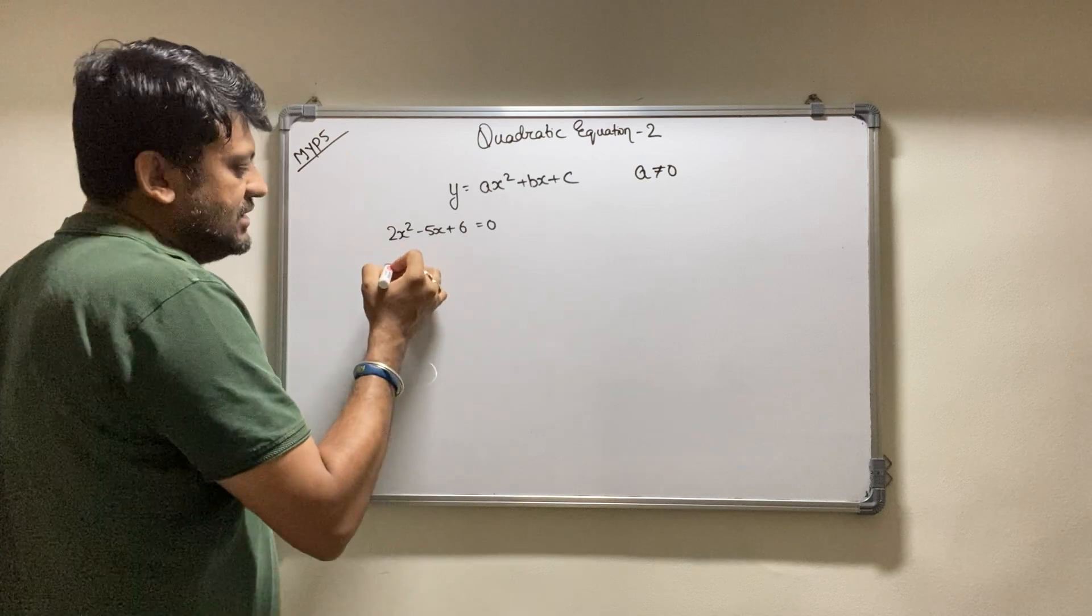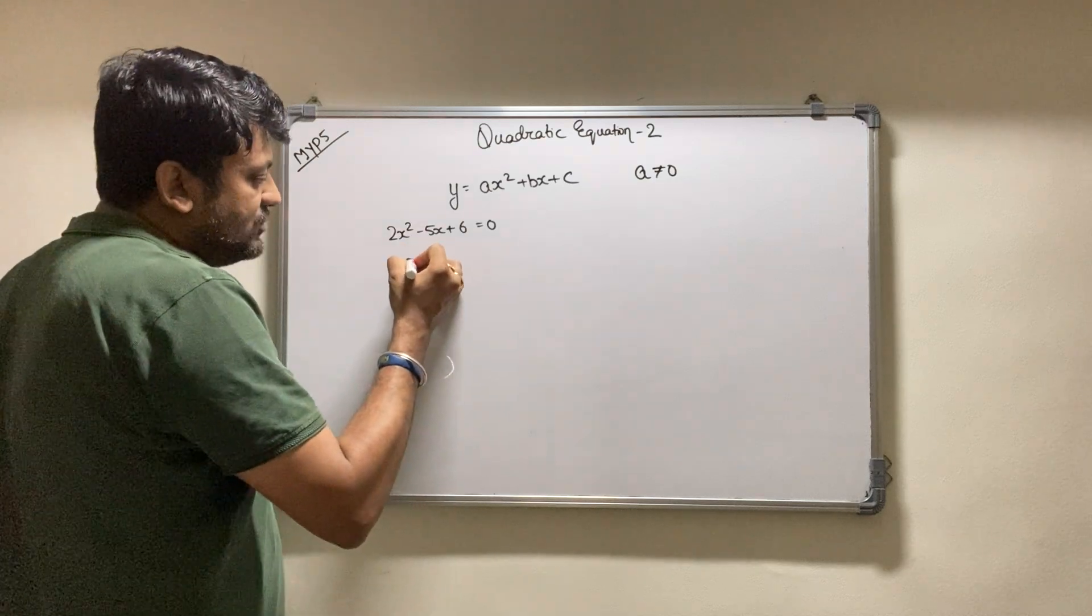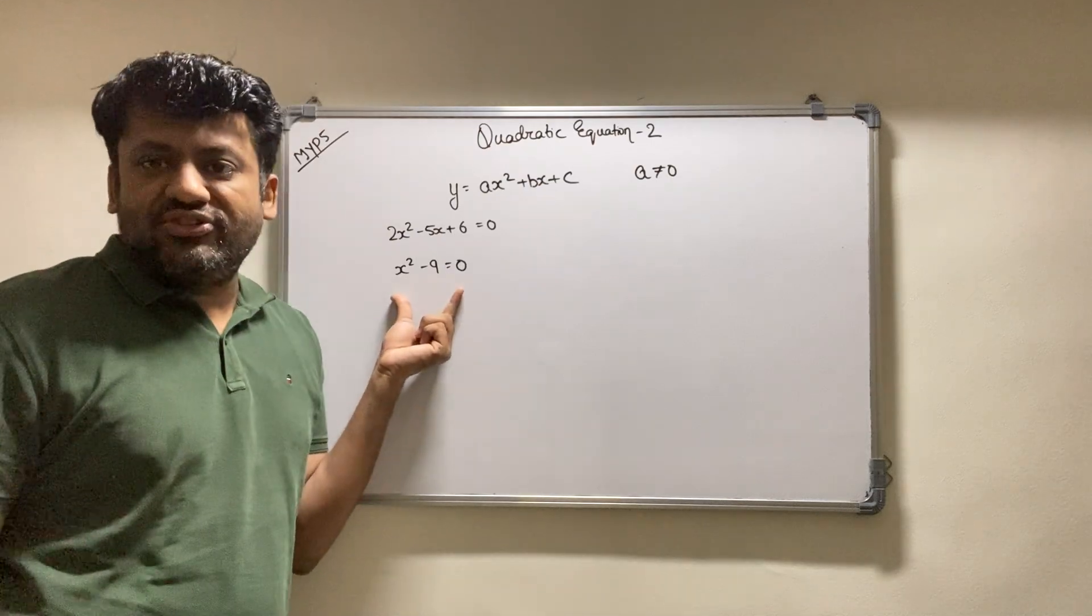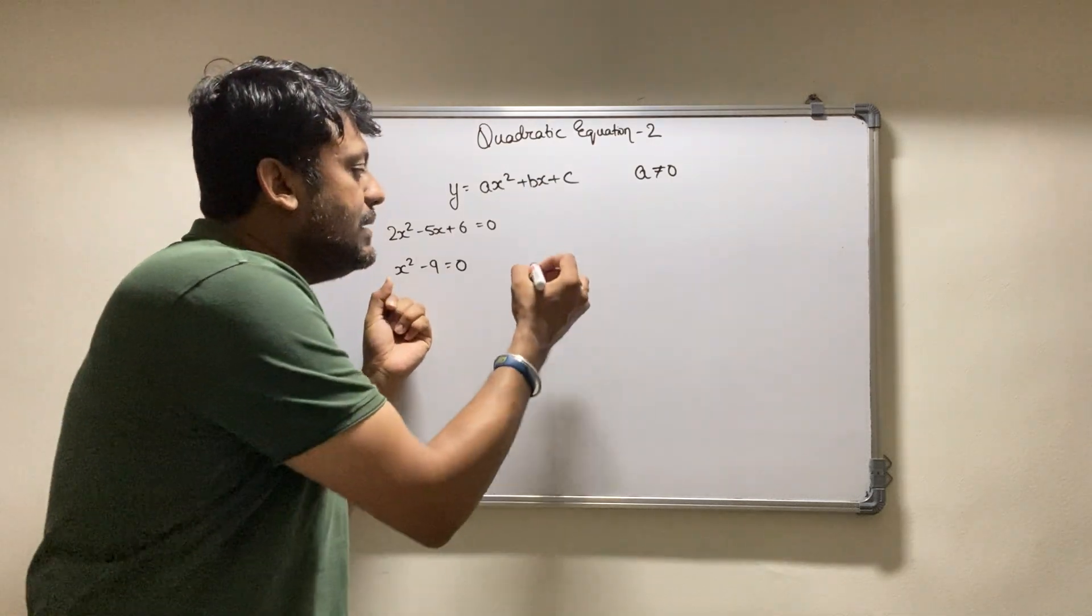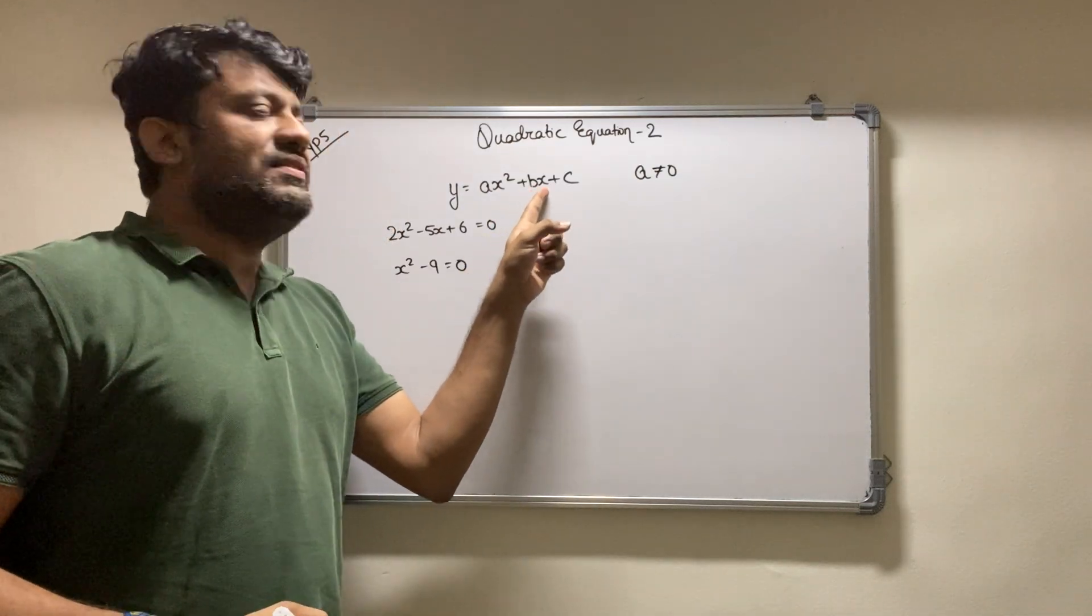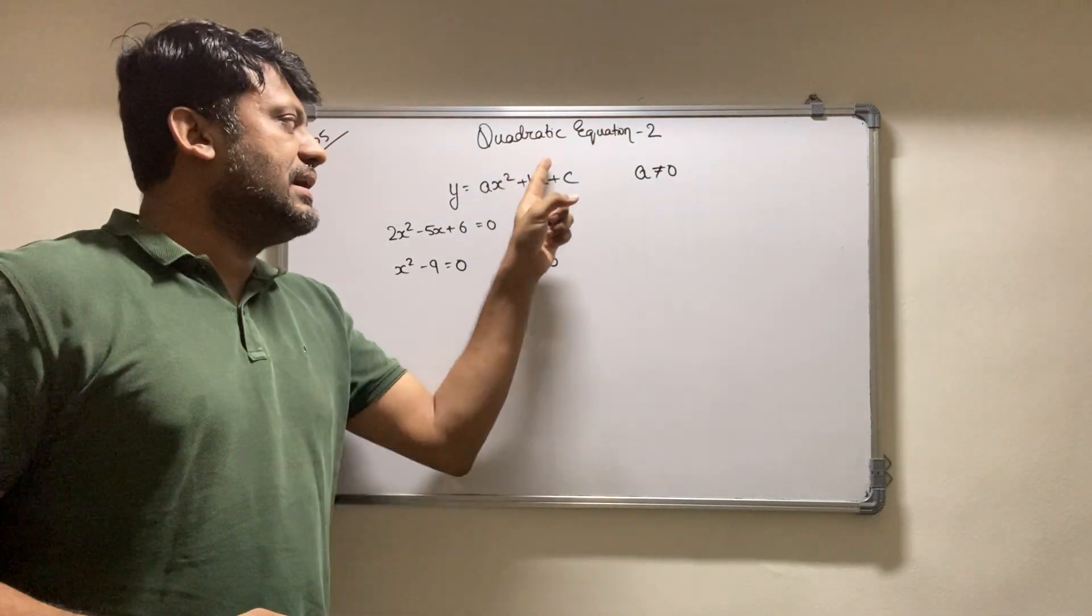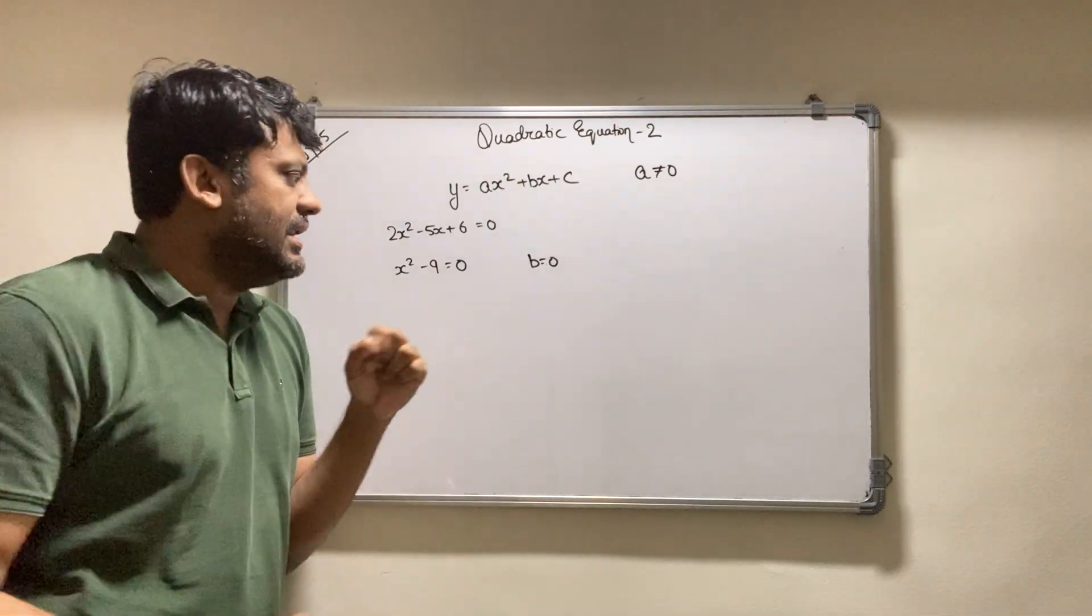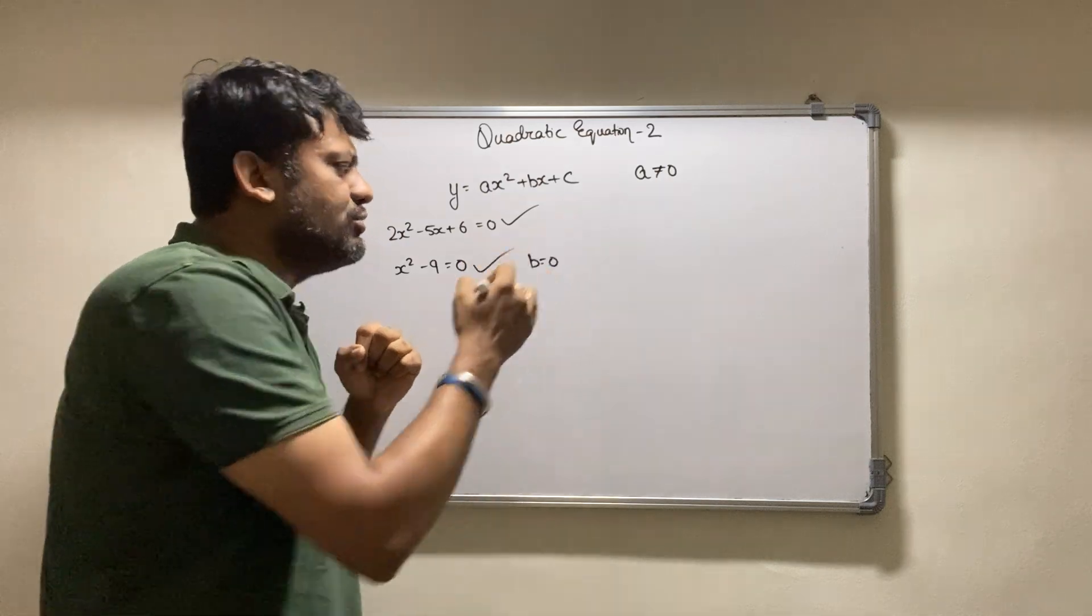Now if I say that x squared minus 9 equals 0, then this is a quadratic equation. Yes, it is a quadratic equation and here b equals 0. You see, when b is 0 it multiplies x and the second term becomes completely 0, and that is why we eliminate it and just write x squared minus 9. So this is also a quadratic equation.